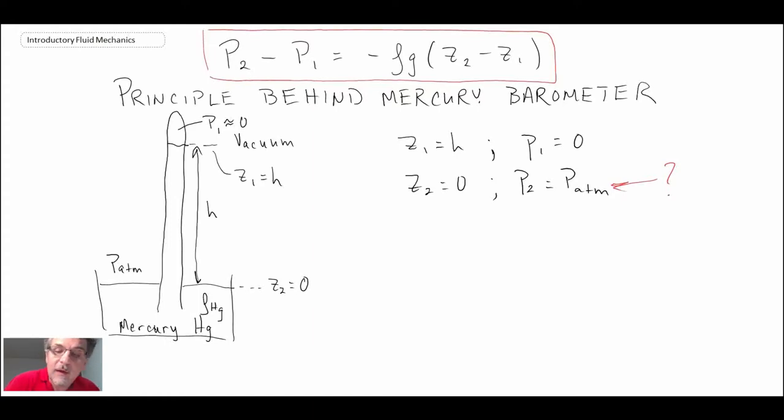So using the equation for hydrostatic pressure distribution in a liquid, we can write P atmosphere, which is P2, minus P1 is zero, is equal to minus rho, the density of mercury, times the gravity constant times Z2 zero minus H.